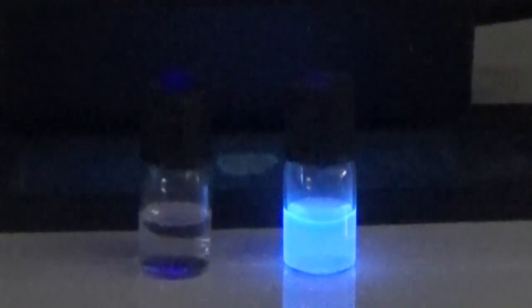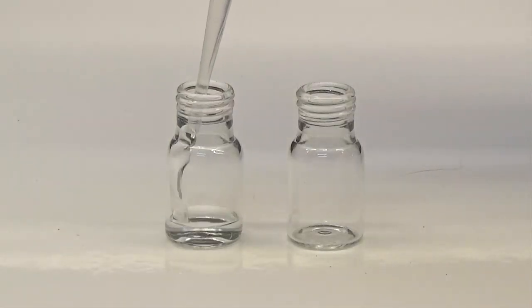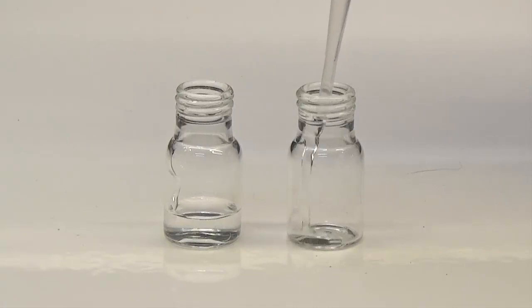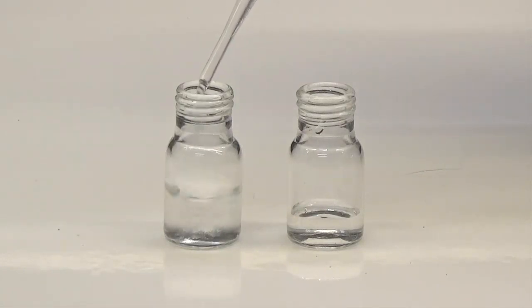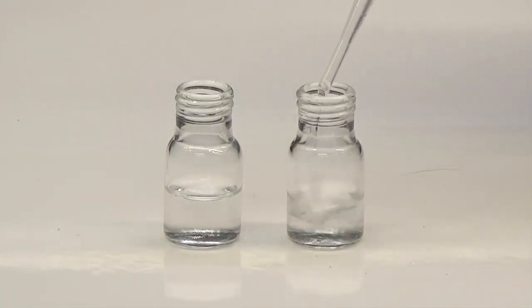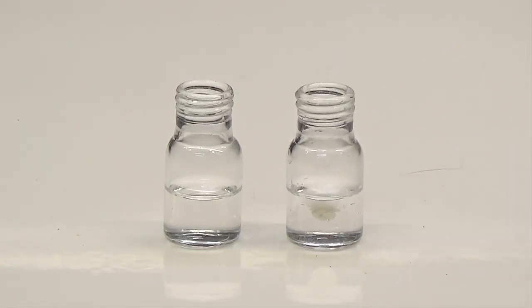Hymecromone fluoresces in solution once irradiated with ultraviolet light. For the test, we mix 1 ml of water and 1 ml of ethanol in 2 vials. In one of these, a small amount of hymecromone is added and agitated to dissolve.